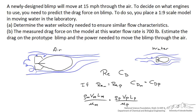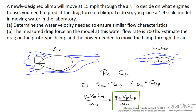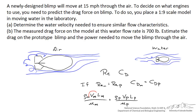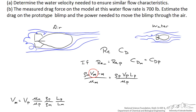Let's expand this out. Here is the density, velocity, and length scale for the model and the viscosity — in this case the density of water, the viscosity of water, and the velocity of the water we're interested in. And here is the Reynolds number for the prototype: the density of air, the viscosity of air, the length of the full size blimp, and the velocity at which it's flying, which is 15 miles an hour. Let's rearrange this equation to figure out the velocity of the water we need.